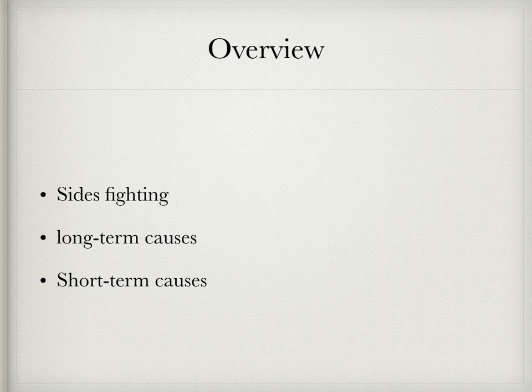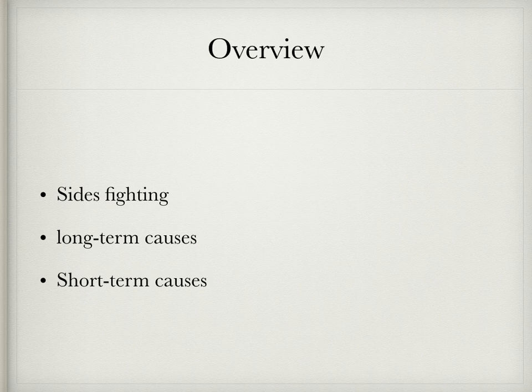Here's a quick overview of things we will be discussing in this lecture. We are going to be discussing the sides fighting this civil war — both the Republican side and the Nationalist side. We'll also see the foreign involvement that gets on board with this civil war, and we'll be talking about long-term causes as well as short-term causes.